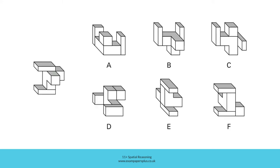In order to answer this question, we're going to consider this figure. We're going to look closely at the relationship between the blocks in that figure and think about how it would look if it rotated around. The resulting rotated version of the figure is represented by one of these six answer options. To help us choose correctly, we can take a closer look at this figure and the blocks within it.